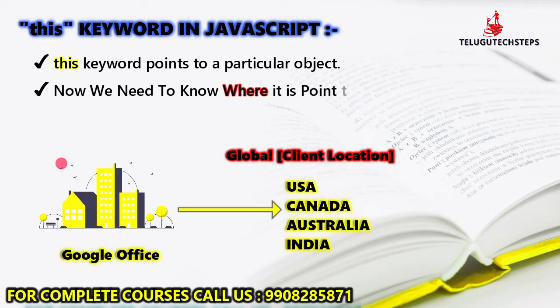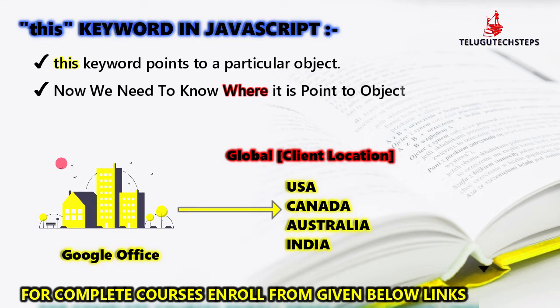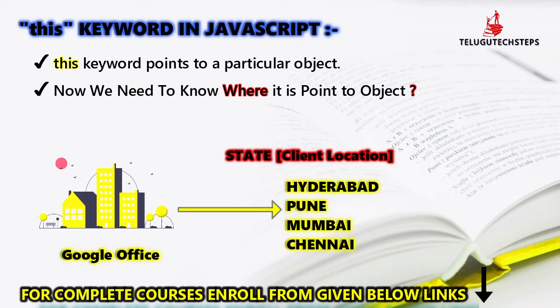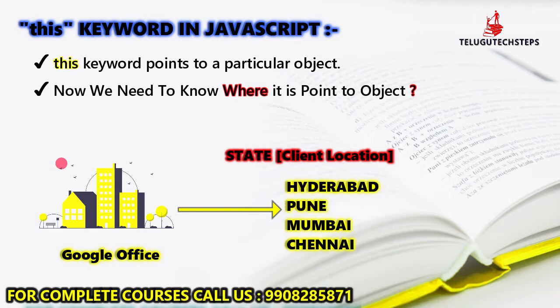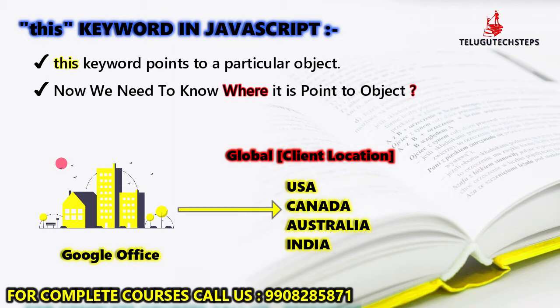For example, the most expensive and luxurious country is the USA. If one of your clients is within India, you can select a local location in India — it may be a high-tech city or any local area. If you are in Hyderabad, you can indicate your object. If you are in India, you can indicate your object. So, the location determines which object is indicated.